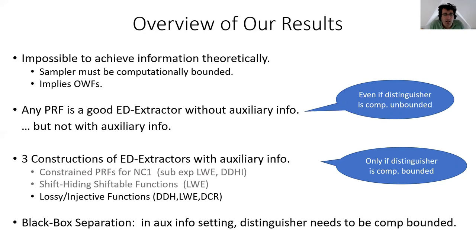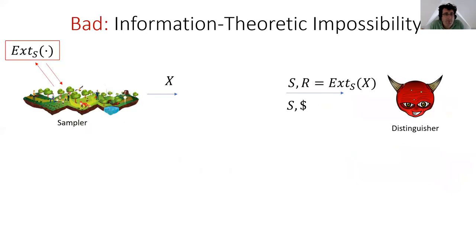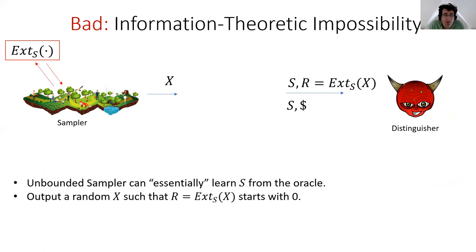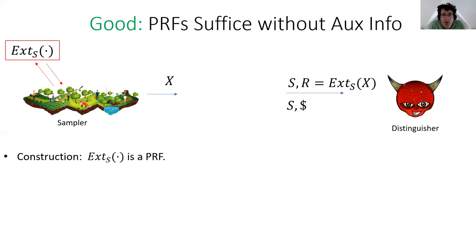In this talk, I'm going to cover just the first two results. Let me start with the negative result: you cannot achieve this notion information-theoretically. The idea is simple. An unbounded sampler with access to the extractor oracle can essentially learn the seed s by making queries to the oracle — not fully, but sufficiently well to predict the output of the extractor on random values. That's enough for it to choose an x such that the extracted output starts with zero, without explicitly querying the oracle on x. If it does so, it satisfies the conditions but ensures the extracted output is easily distinguishable from uniform.